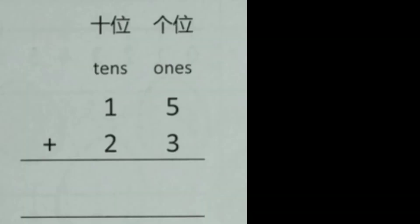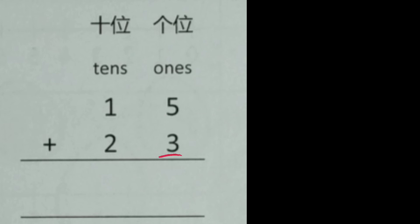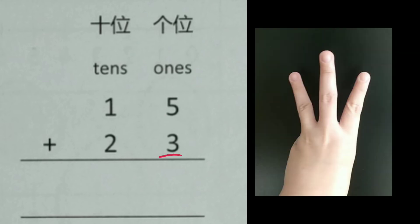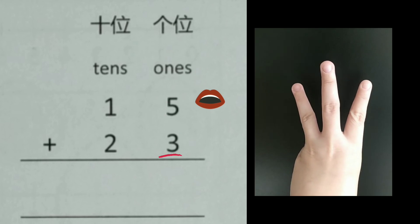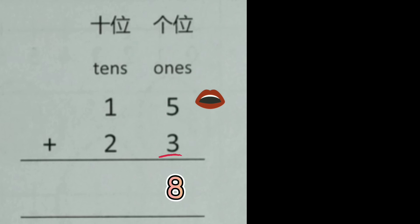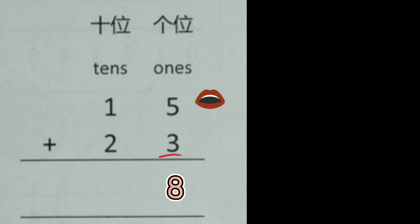Now let's go to the next question. 15 plus 23 equals how many? Always start from the ones column. Underline the smaller number, 3, and show three fingers. Say the bigger number in the mouth: 5. Let's count: 5, 6, 7, 8. The answer is 8.